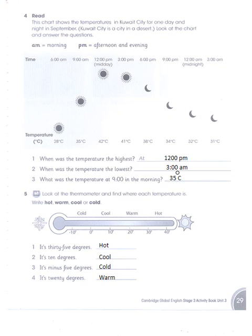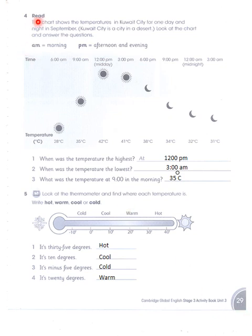Okay dear friends, today we will be starting worksheet number four of your class three English. It is on page number 29, Cambridge Global English Stage 3 Activity Book, and first of all we'll do the read part.